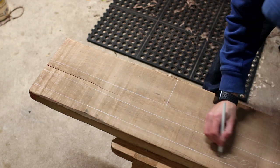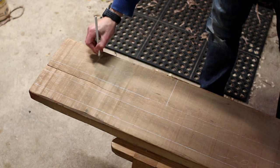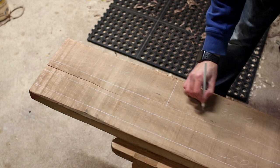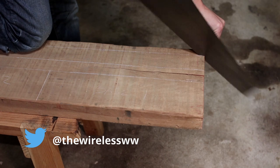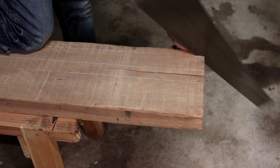I'm just going to use a speed square to roughly mark everything out, then label all of my parts. Now, on to rough sawing everything. Nothing fancy here—obviously a sharp saw is going to be helpful.